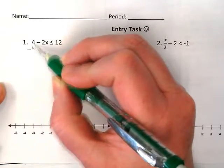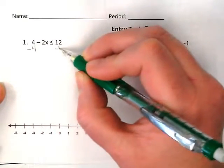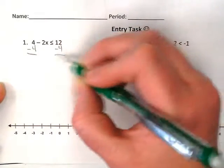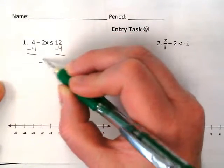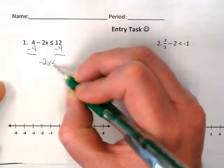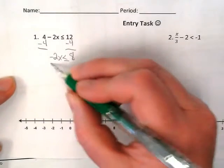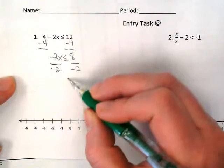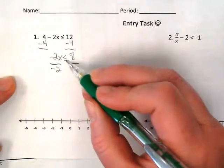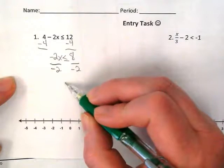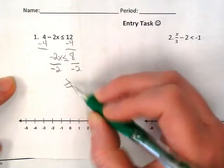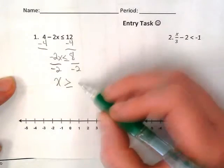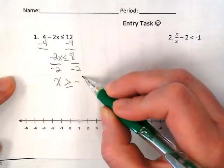This is a positive 4, so to move it away from the variable we're going to subtract. That leaves us with negative 2x is less than or equal to 8. We're going to divide by negative 2, and because we're dividing by a negative, our symbol is going to switch.